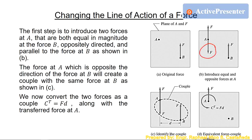The next step is that the force at A which is opposite in direction to the force at B will create a couple with the same force at B, as shown in figure C. As you can see, these two forces — the downward force at A and the upward force at B — create a couple phenomenon. We need to convert this couple into a couple transfer, which we will call Ct. As you may remember from our previous lecture on couples, the formula is force times distance, where F is the magnitude of the pair of parallel, oppositely directed forces and D is the distance between them.